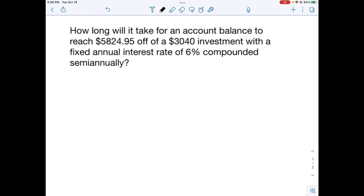How long will it take for an account balance to reach $5,824.95 off of a $3,040 investment with a fixed annual interest rate of 6% compounded semi-annually? We're going to find the time because it asks how long will it take.